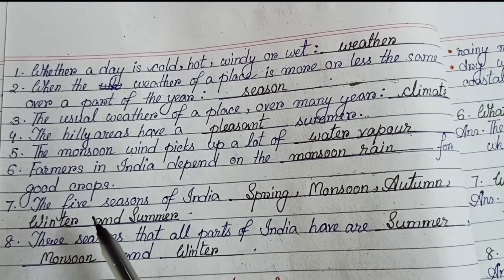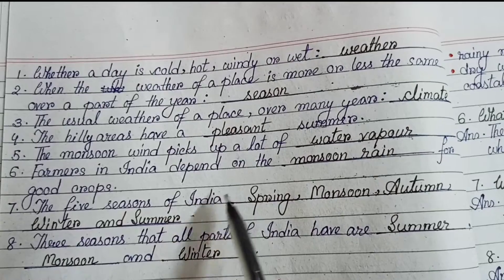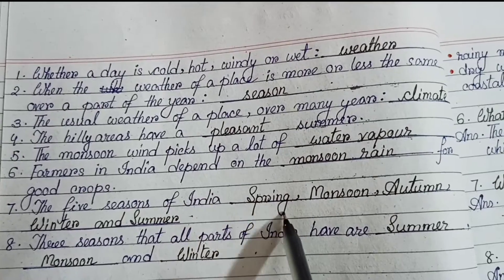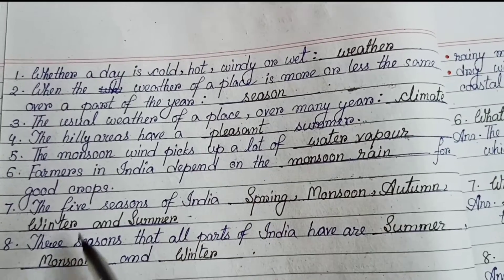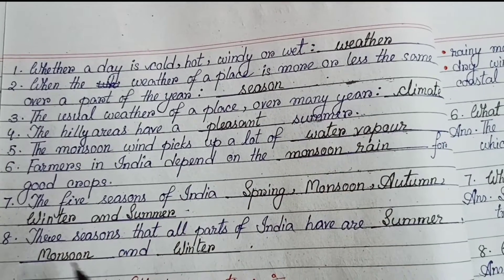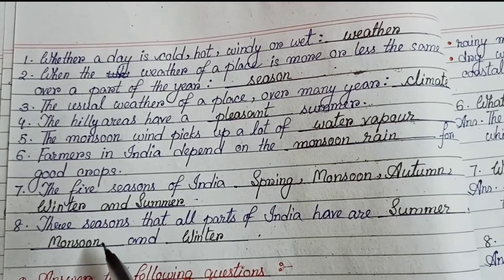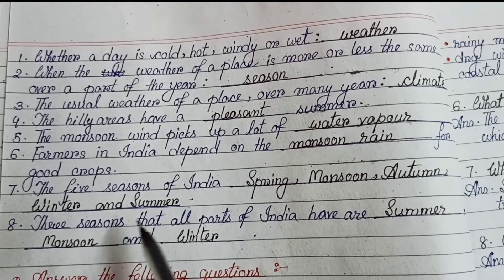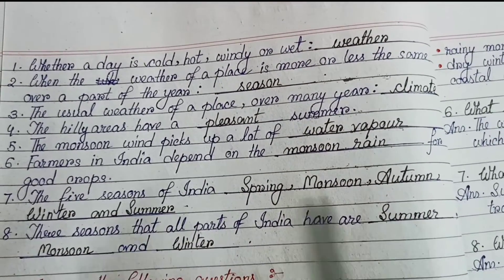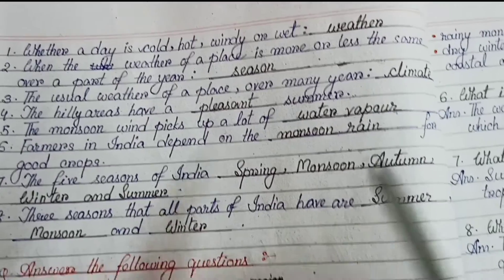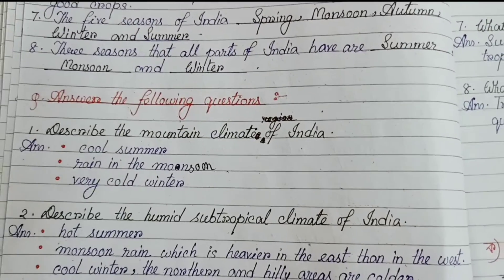Number 7: the five seasons of India — spring, monsoon, autumn, winter, and summer. Number 8: three seasons that all parts of India have are summer, monsoon, and winter.